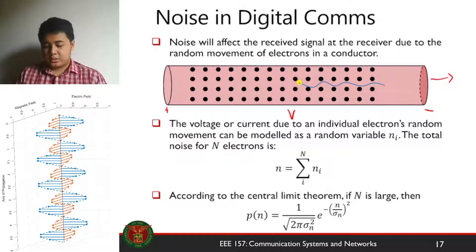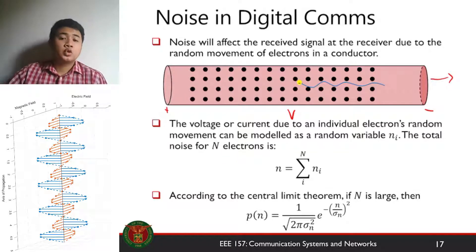So the voltage and current due to this random movement can be modeled as any form of distribution. It could be uniform distribution, it could be discrete, it could be any form of distribution basically. The total noise, noise voltage for n electrons is the sum of the individual fluctuations due to each individual electron.